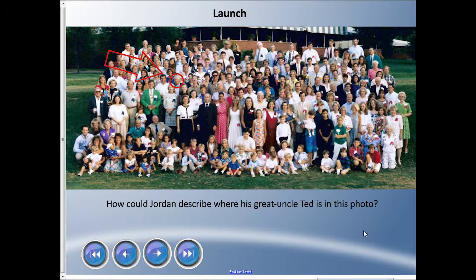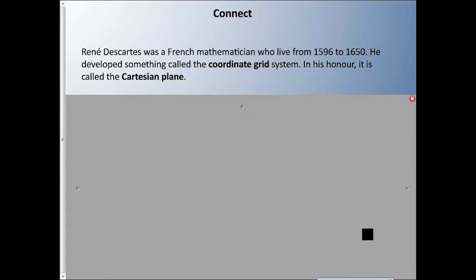All right, hello there! Welcome back to another lesson in patterns and equations. We're going to take a break from the tables and all the inputs and outputs and look at something a little bit different, yet still related. Let's start off here with this picture of a family reunion. I have a question: how could Jordan describe where his great uncle Ted is in this photo?